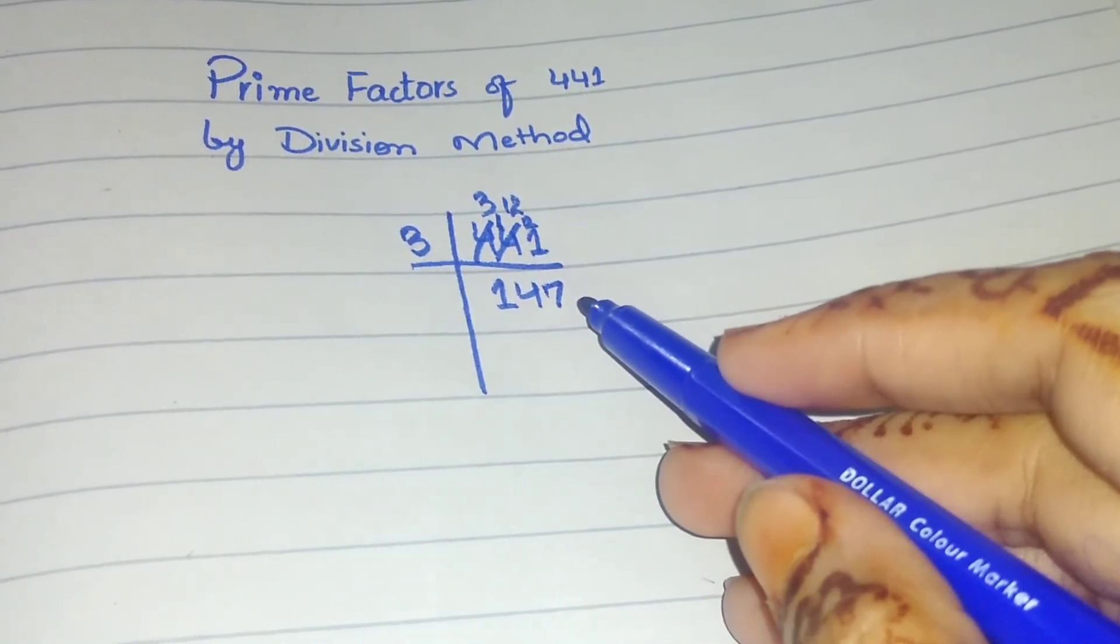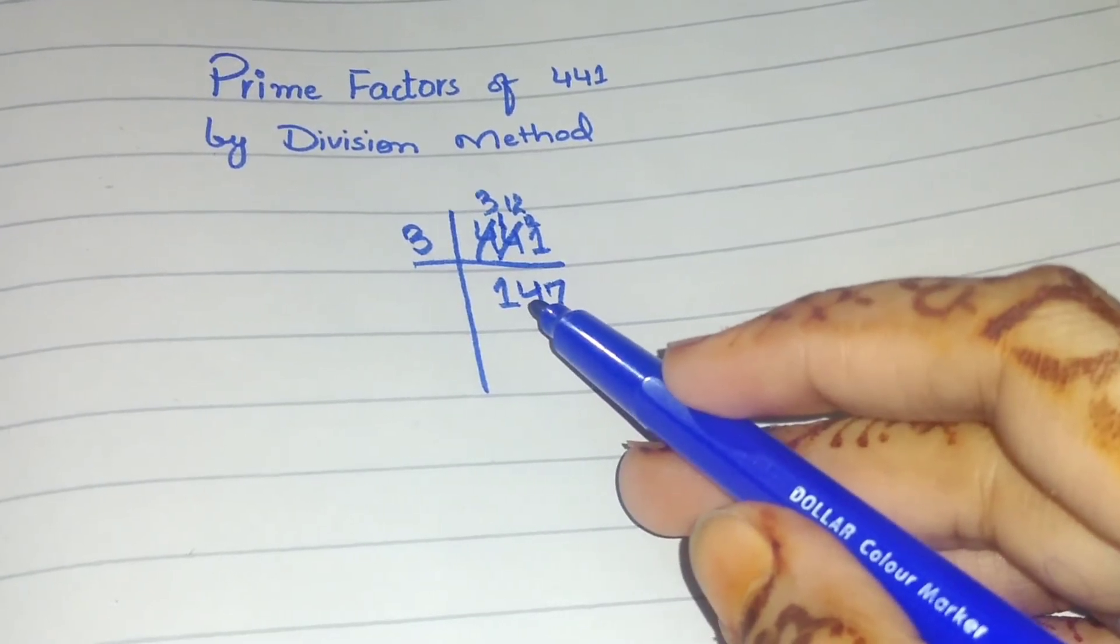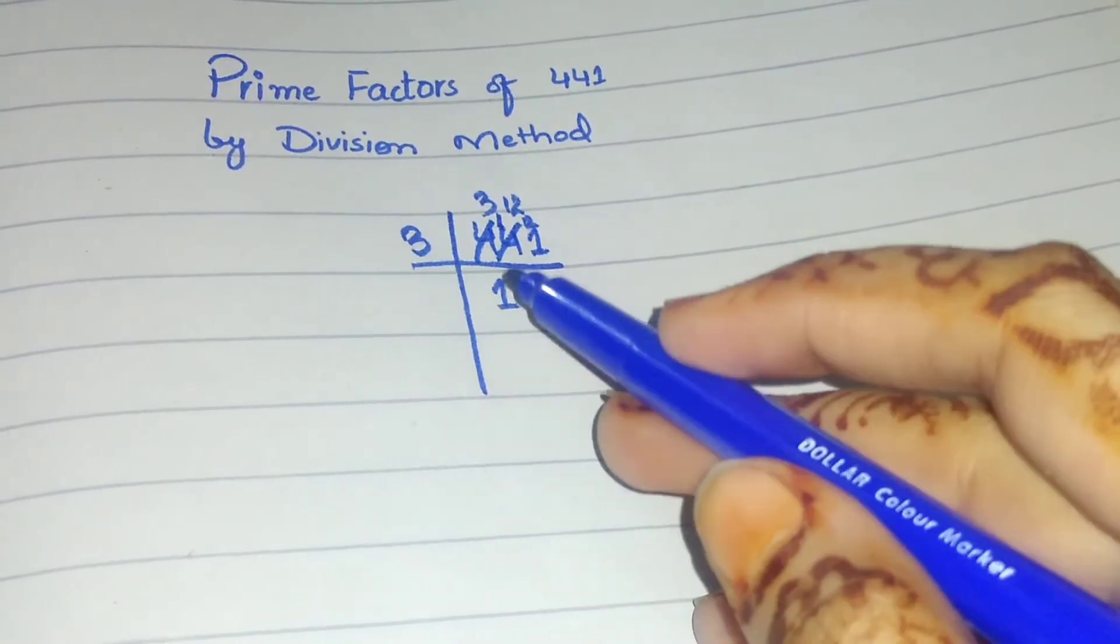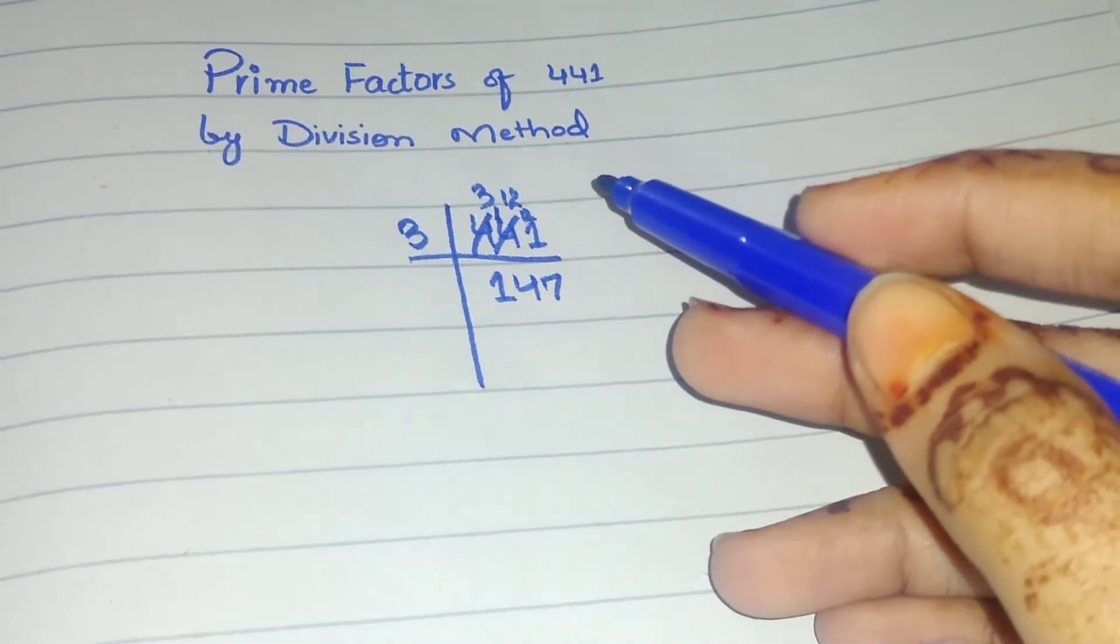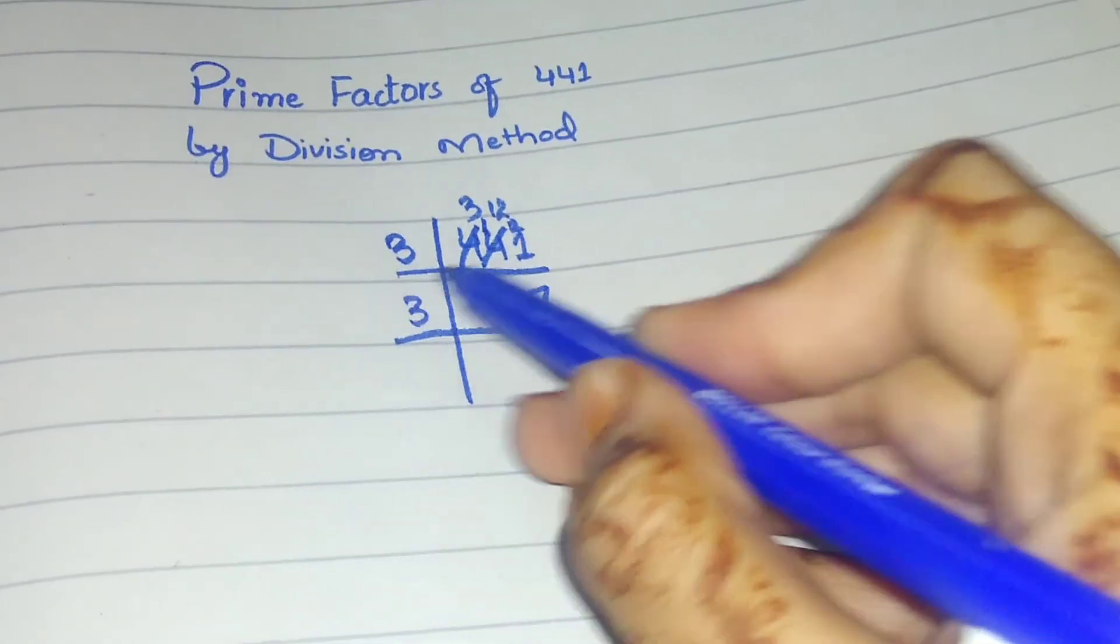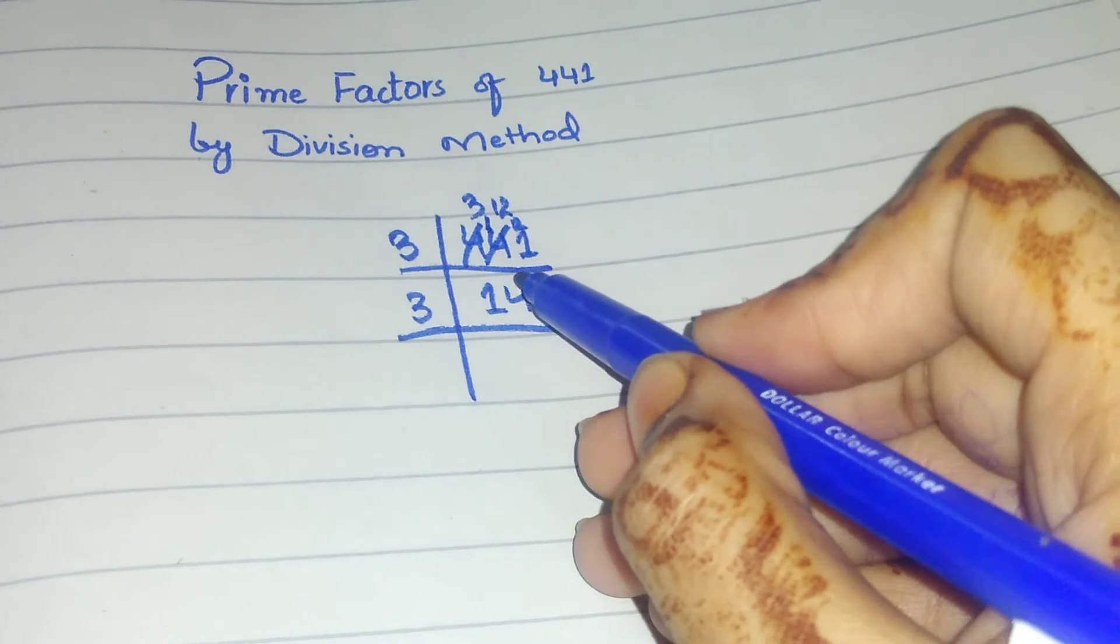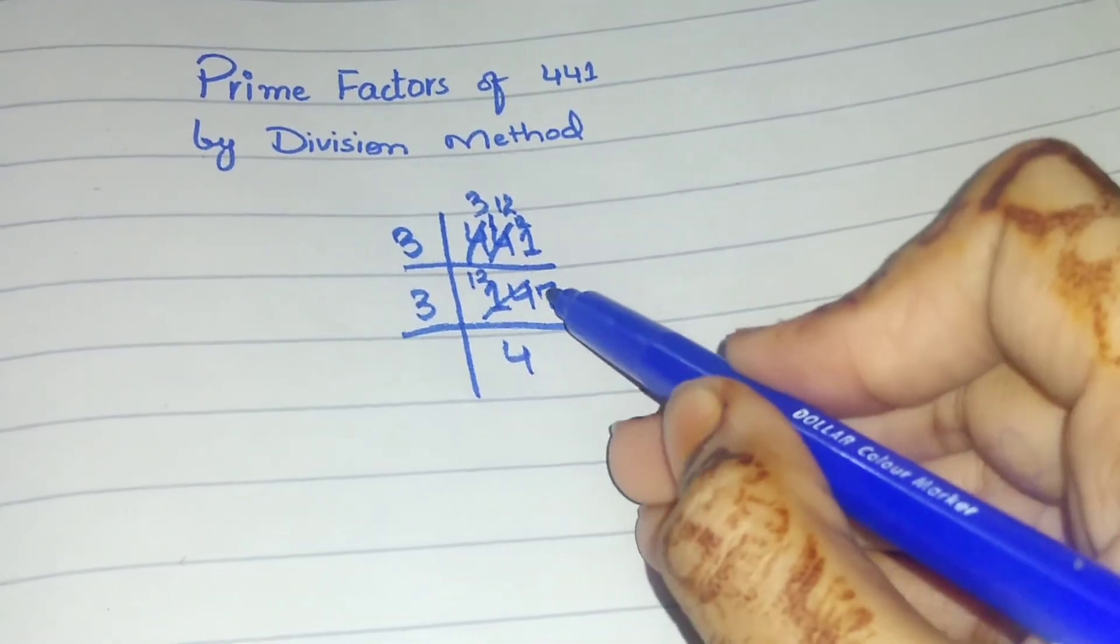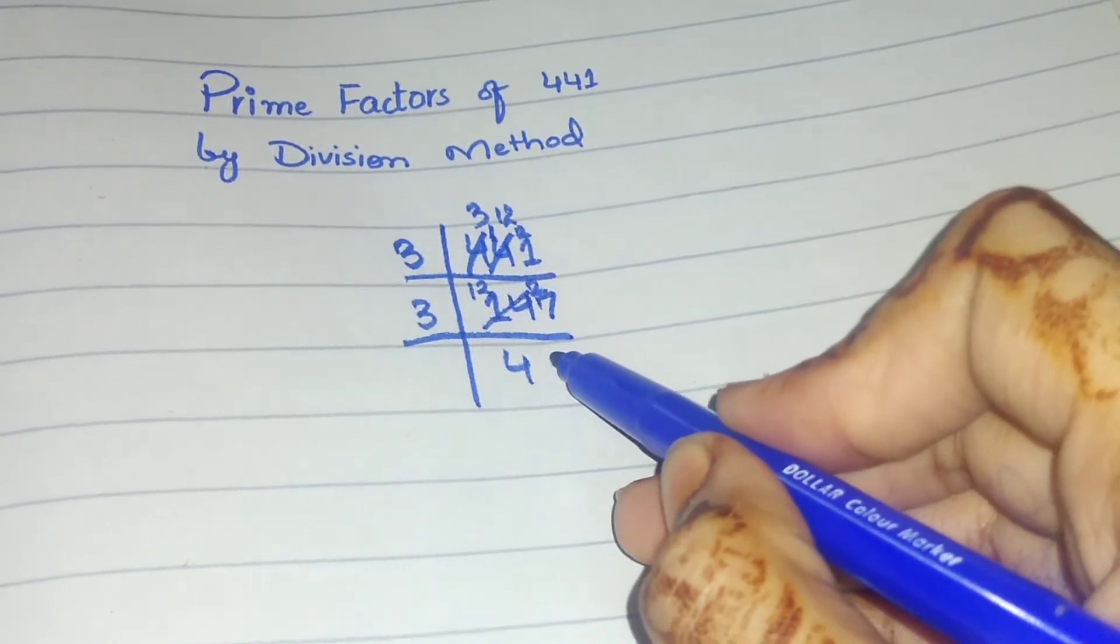We will check if 147 is divisible by 3. 1 plus 4 is 5, 5 plus 7 is 12, and 12 is divisible by 3. So we will divide by 3 again. In the 3 table, there is no 14, so 3 times 4 is 12, remainder 2. Bring down 7 to make 27. 3 times 9 is 27. Now we have 49.